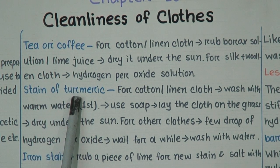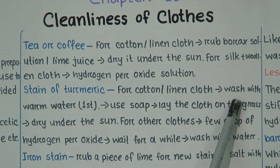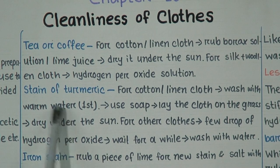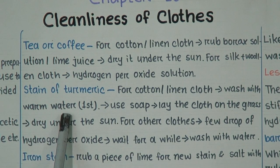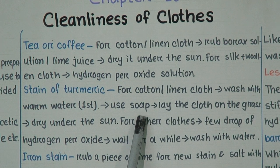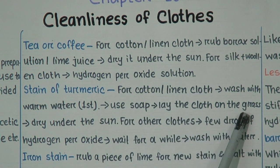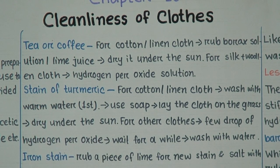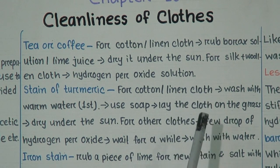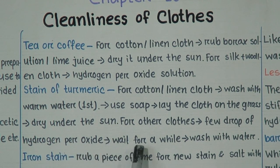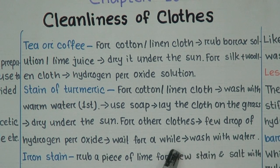For stain of turmeric on cotton or linen cloth: first wash with warm water, then use soap, lay the cloth on the grass, and dry it under the sun. For silk or woolen cloth: apply drops of hydrogen peroxide, wait, then wash with water and dry the cloth.